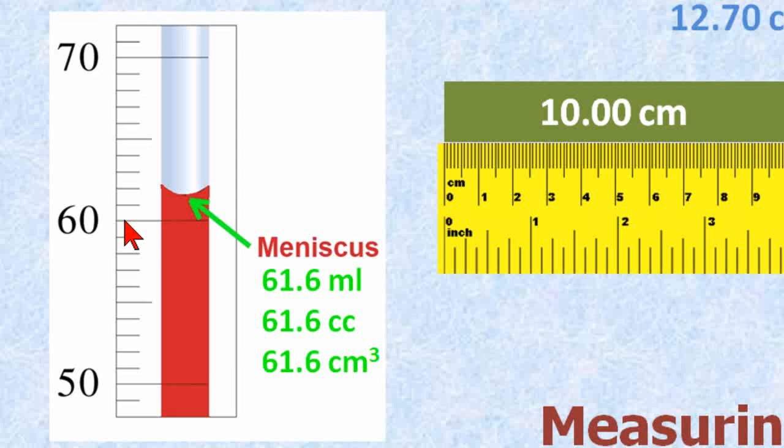The graduations are in one milliliter units. We go up here to 60, we can read 61, 62, and we need to estimate the tenth of a milliliter in between these graduations. When we read across the graduations here, we can read that this measurement is 61.6 milliliters.